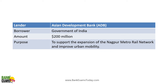Asian Development Bank lent money to Government of India — 200 million dollars to support the expansion of Nagpur Metro Rail Network and improve urban mobility.